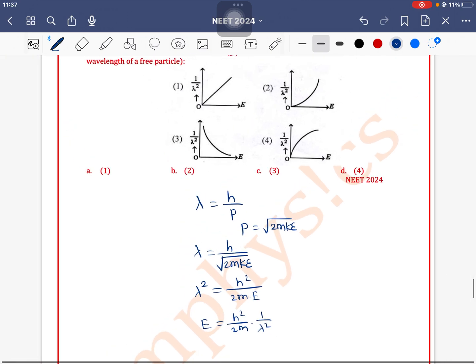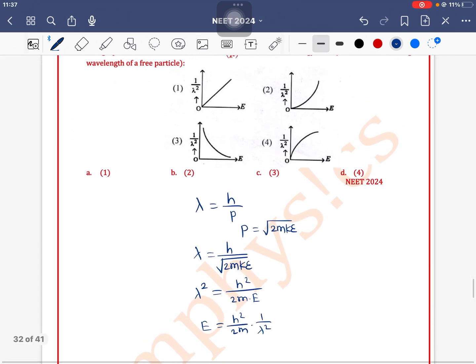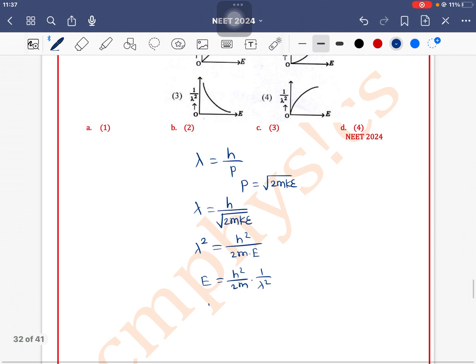So if we draw the graph for this, 1 by lambda square is equal to 2m by H square into E.